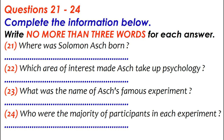He went to an ordinary high school, and as he had an interest in human behaviour, he decided to study psychology. He was quite disappointed with his first acquaintance with psychology — it seemed to be all about rats and mice, and that didn't interest him at all. However, he persevered and eventually became a professor of psychology. The experiment which made his name is called the line judgment task.